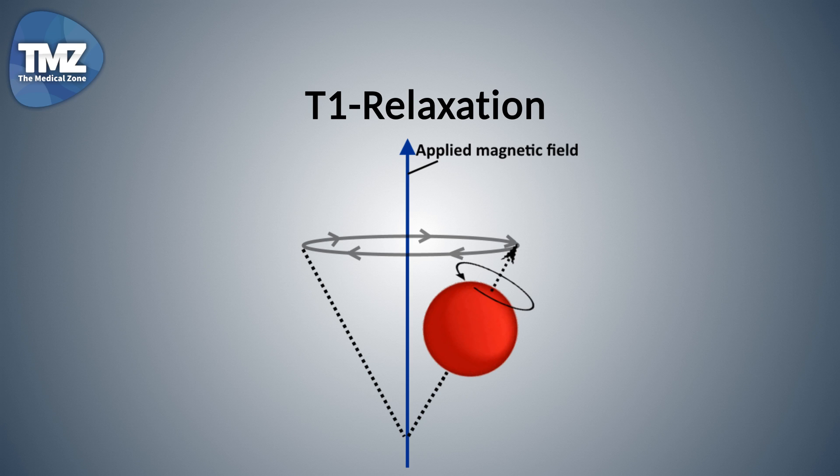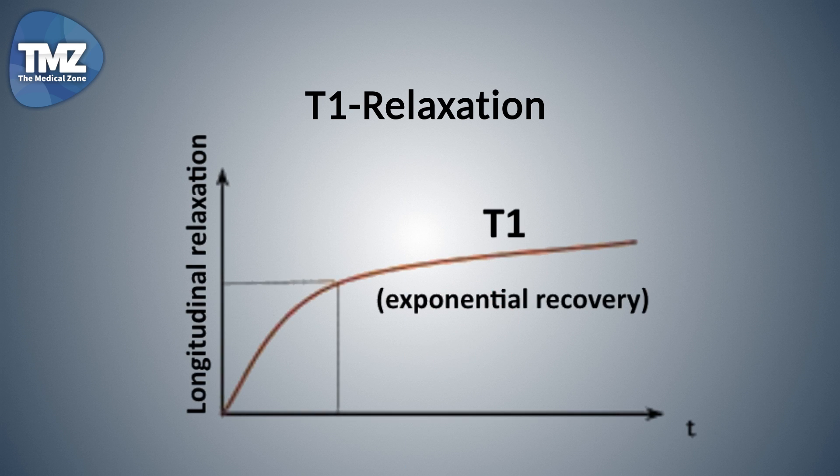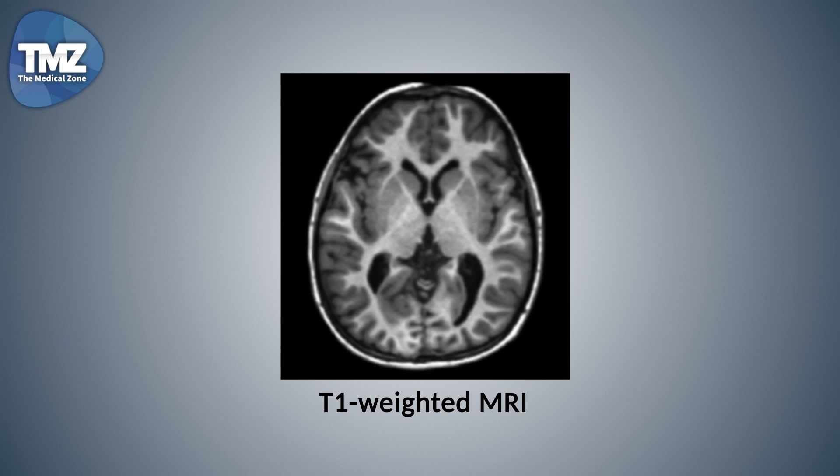Protons in different tissues relax at different rates, so they all have their own T1 relaxation graph. And the clinical use of this is on a T1 weighted MRI. CSF is dark and blood and fat are bright.